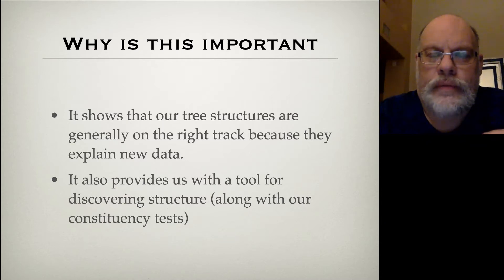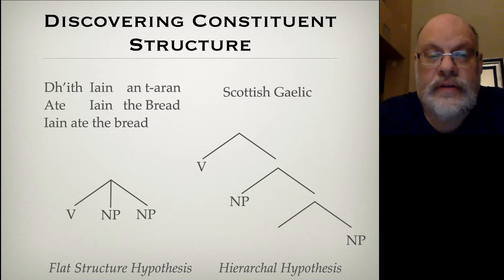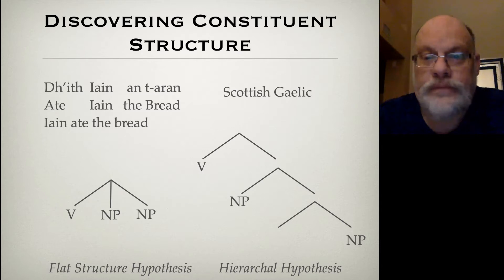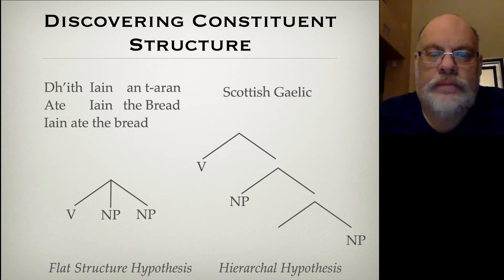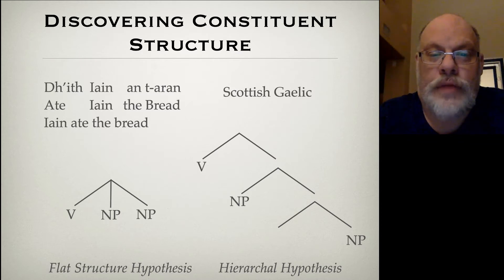Let me give you an example to put some actual teeth into that question. Let's think about VSO languages. VSO languages are verb-subject-object languages. This Scottish Gaelic sentence is in the order verb, subject, object. So although the words appear in the order 'ate Ian the bread,' it means 'Ian ate the bread.' Now, there are two hypotheses about how these sentences are structured. One is that the two noun phrases are what we call flat — the two noun phrases are on the same level as the verb.